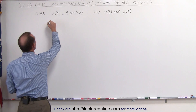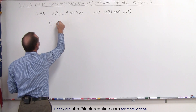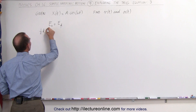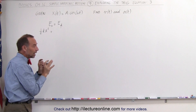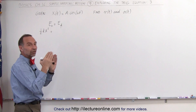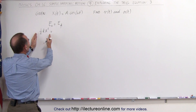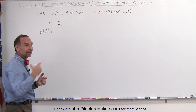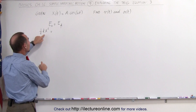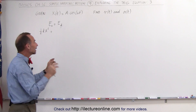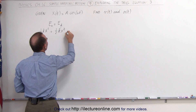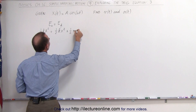Starting with the energy equation, we can say that energy initial equals energy final, or we can say that ½kA². That's the condition where we take the object and push it as far away as possible from the equilibrium point where x equals A, so that all the energy is stored in the spring, equal to ½kA². Then we let go, and the energy remaining will be divided into both kinetic and potential energy: ½kx² where x is less than A, plus ½mv².